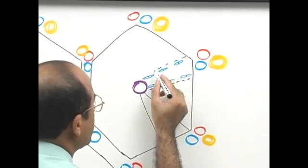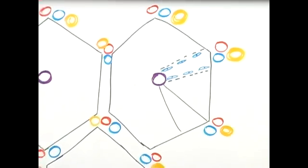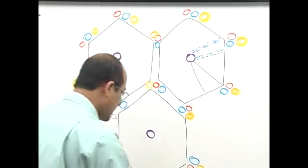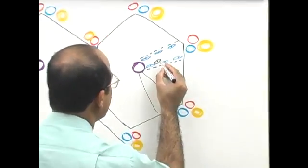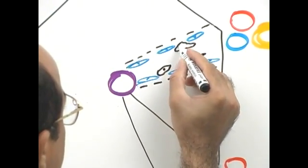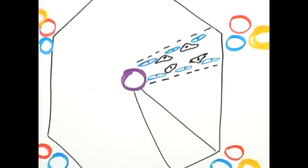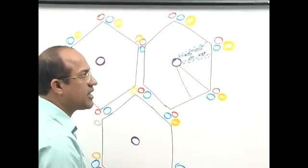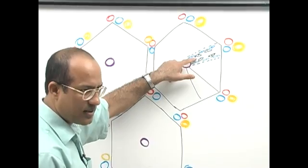What about the basal lamina? Even the basal lamina is discontinuous — it has very large gaps and is not complete. Then another very important aspect is that there are very special type of cells here which are called Kupffer cells. These are derived from circulating monocytes or macrophages.